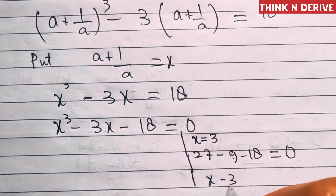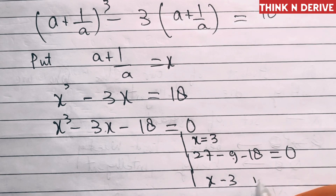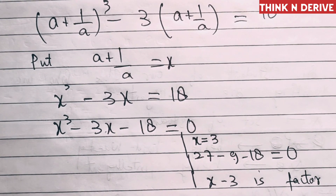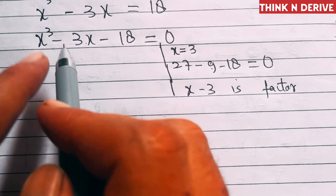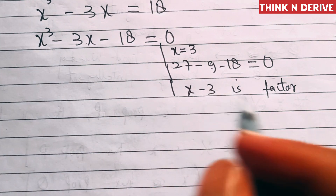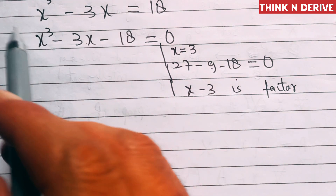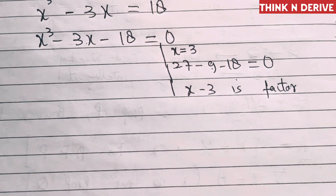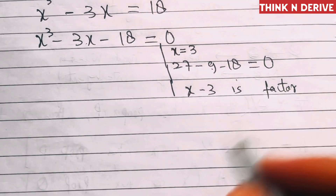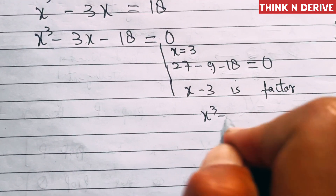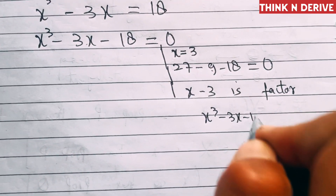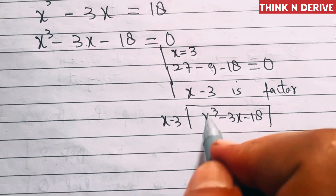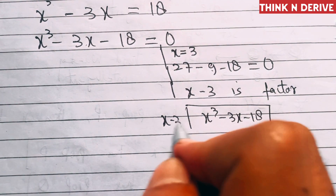So x - 3 is a factor of this cubic equation. If we divide the cubic equation by this factor, it will break down into a linear and a quadratic equation. So let's divide x³ - 3x - 18 by x - 3.